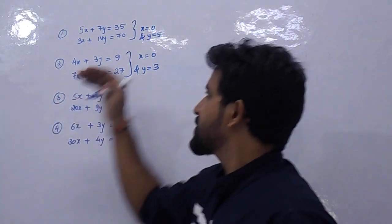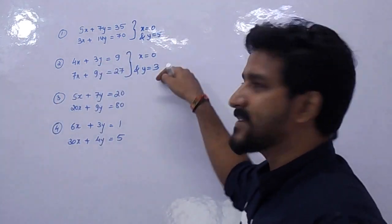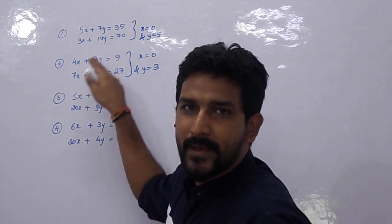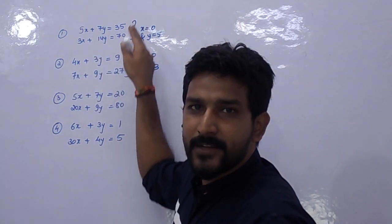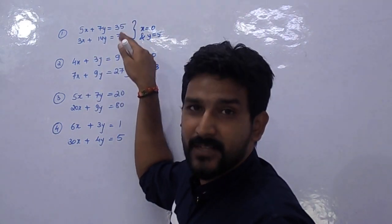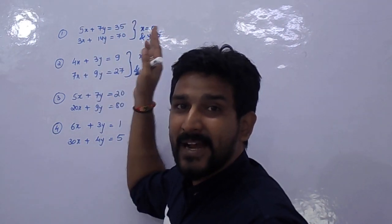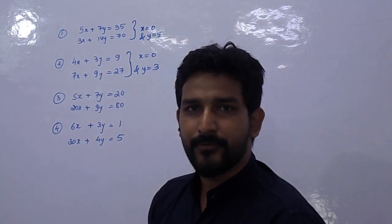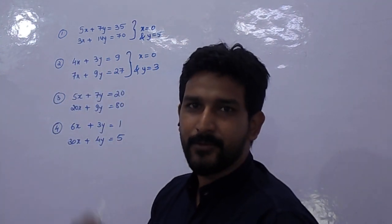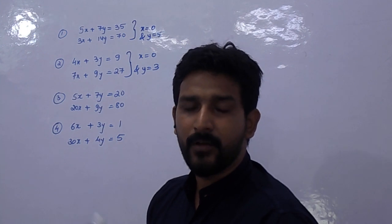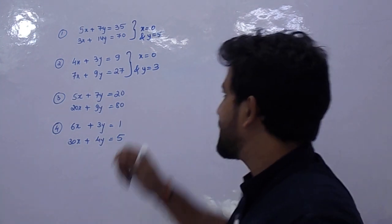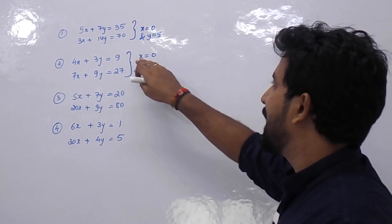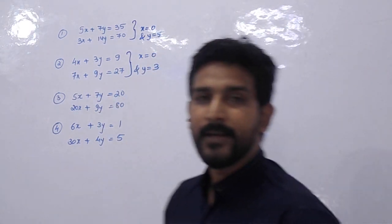So what we have seen in the first two examples is that if the ratio of coefficient of y equals the ratio of the constant value, that is b1 upon b2 equals c1 upon c2, in that case you can directly take the value of x as 0 and solve for y. You get x equals 0 and y equals 5 in the first, and x equals 0 and y equals 3 in the second.